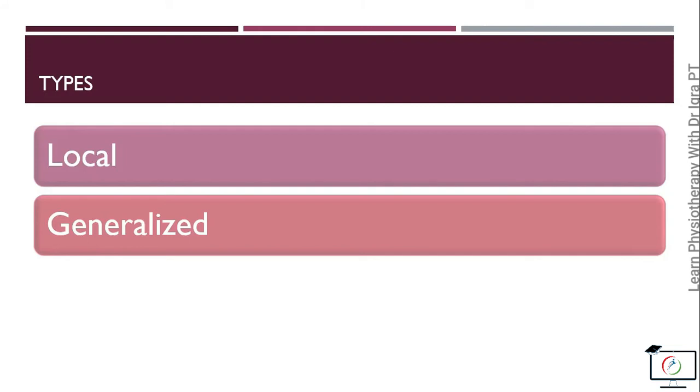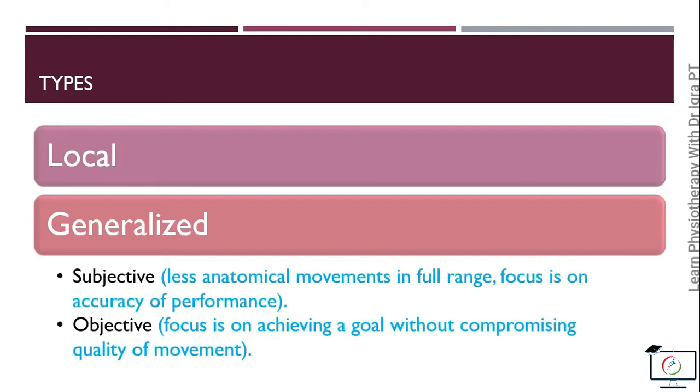These generalized exercises are further divided into subjective and objective free exercises. In the subjective one, the focus is on the accuracy of the performance with less emphasis on anatomical movements in full range. The patient may not complete the range of motion, but he should perform the exercise accurately with focus on the form and pattern of the exercise.